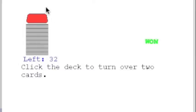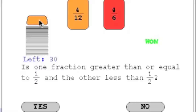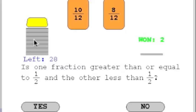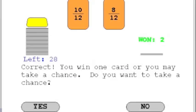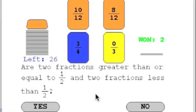Take a Chance uses fraction playing cards that are turned face down. Two cards are turned over. If one is greater than or equal to one half and one is less than one half, the player wins the two cards. If this condition is not satisfied, the player can turn over two more cards. The player wins all four cards if two are greater than or equal to one half and two are less than one half.